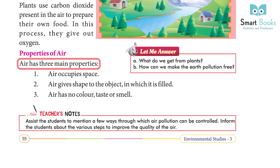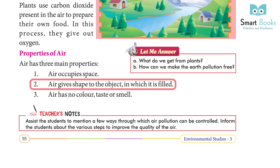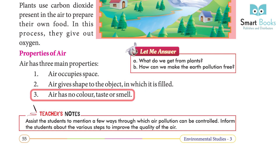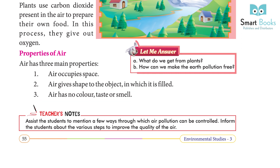Properties of air: Air has three main properties. One — air occupies space. Two — air gives shape to the object in which it is filled. Three — air has no color, taste, or smell.